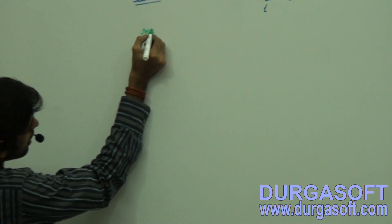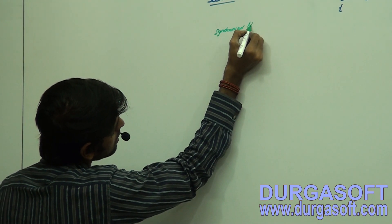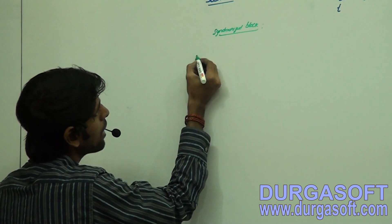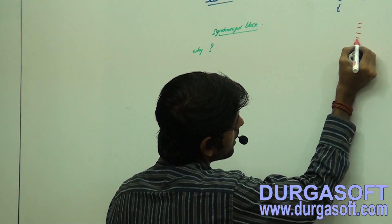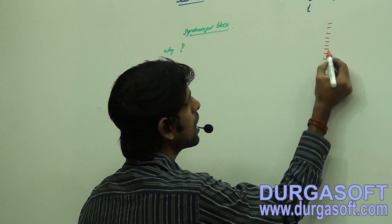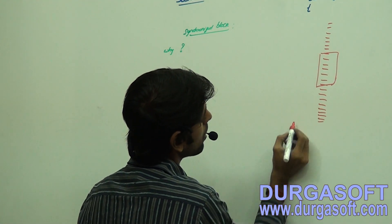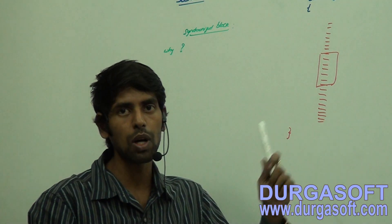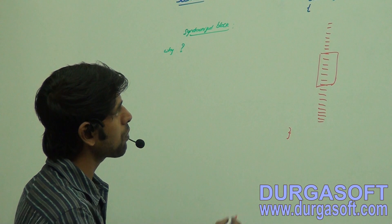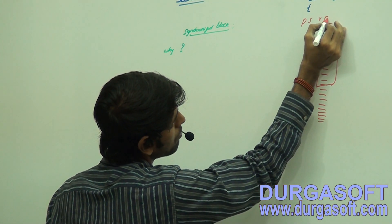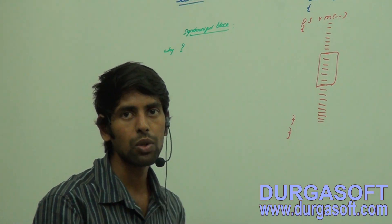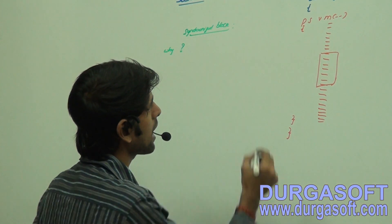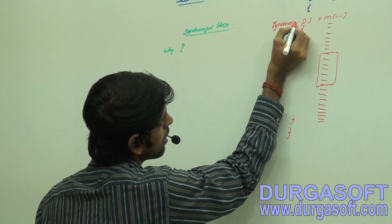Why do we need a synchronized block? Think that I have a method with N number of lines of code. Only one particular piece of code has a data inconsistency problem. So what I am going to do — think there is a method `public static void main`. In order to avoid data inconsistency, I am going to declare that main method as synchronized.